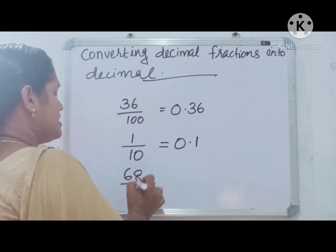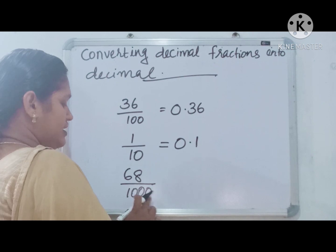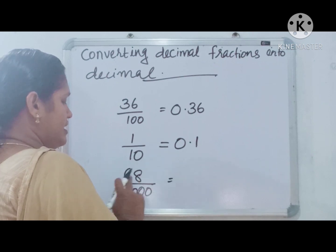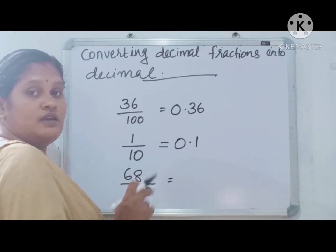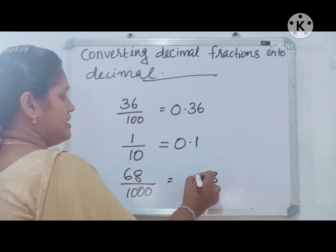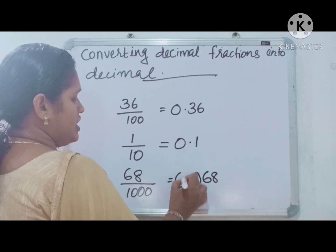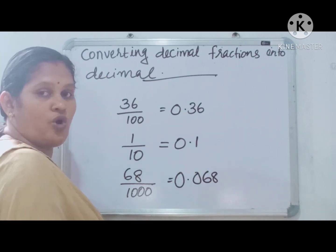Next, 68 by 1000. How many zeros are here? 3 zeros. But here 68 has only 2 places, so write 68, then 1 zero. 0.068 is the decimal number.